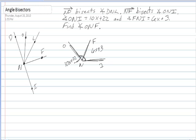But since NF is a bisector, that means that ONF is also 6x plus 3. Then we can write an equation where the entire angle, 10x plus 22, is equal to 6x plus 3 plus 6x plus 3.